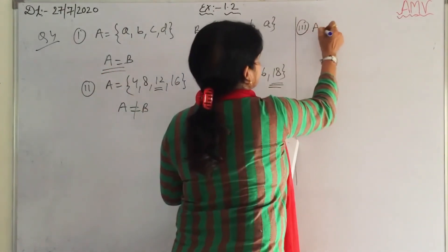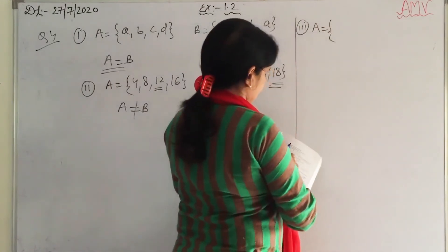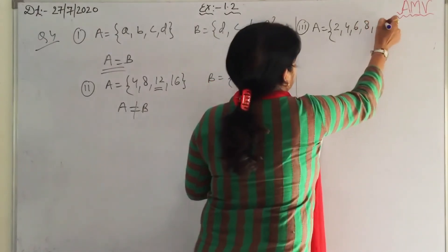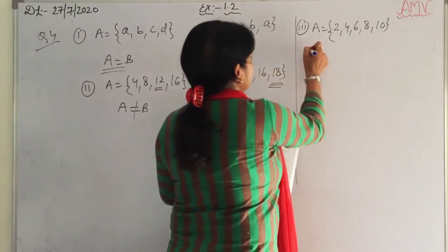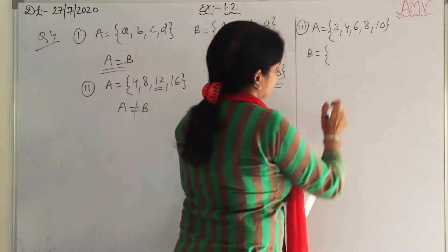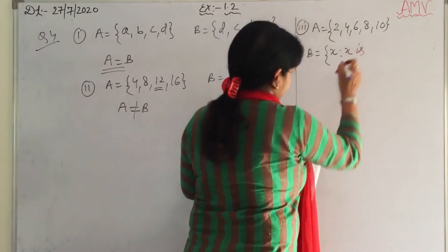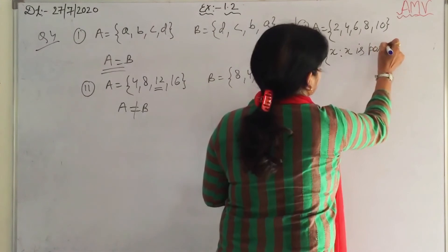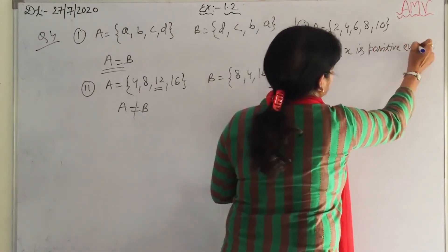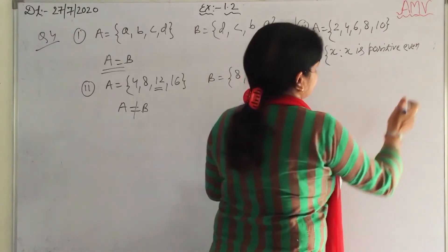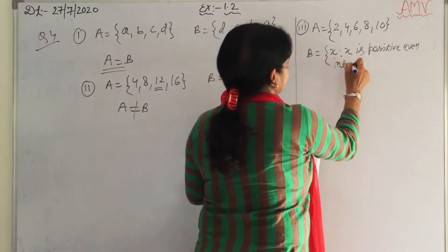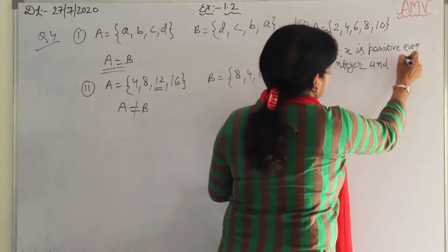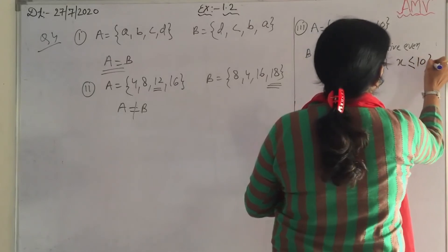Third part: A = {2, 4, 6, 8, 10} and B = {x : x is a positive even integer and x ≤ 10}. First, write B in roster form. Positive even integers less than or equal to 10 are: 2, 4, 6, 8, and since x ≤ 10, it includes 10.